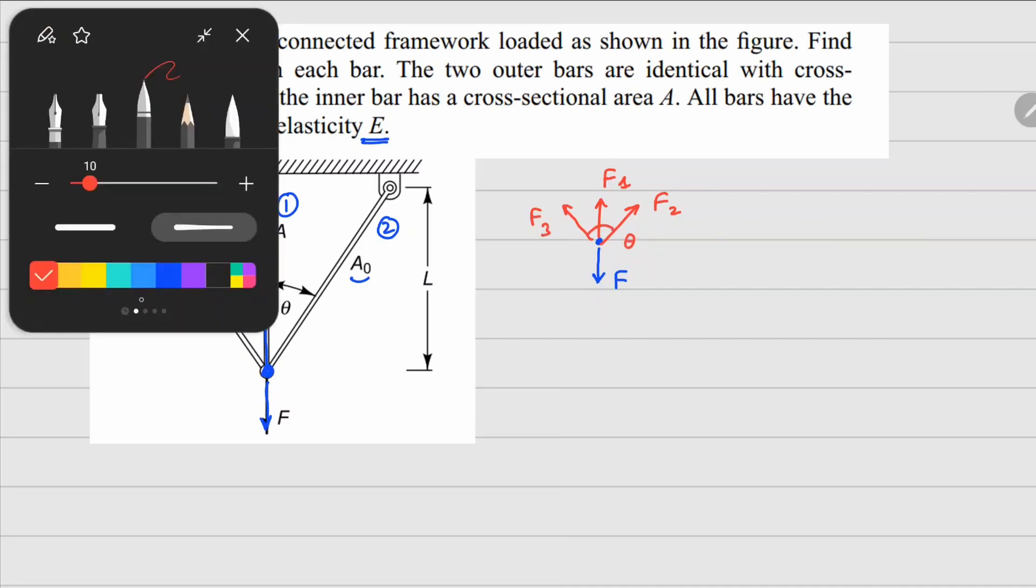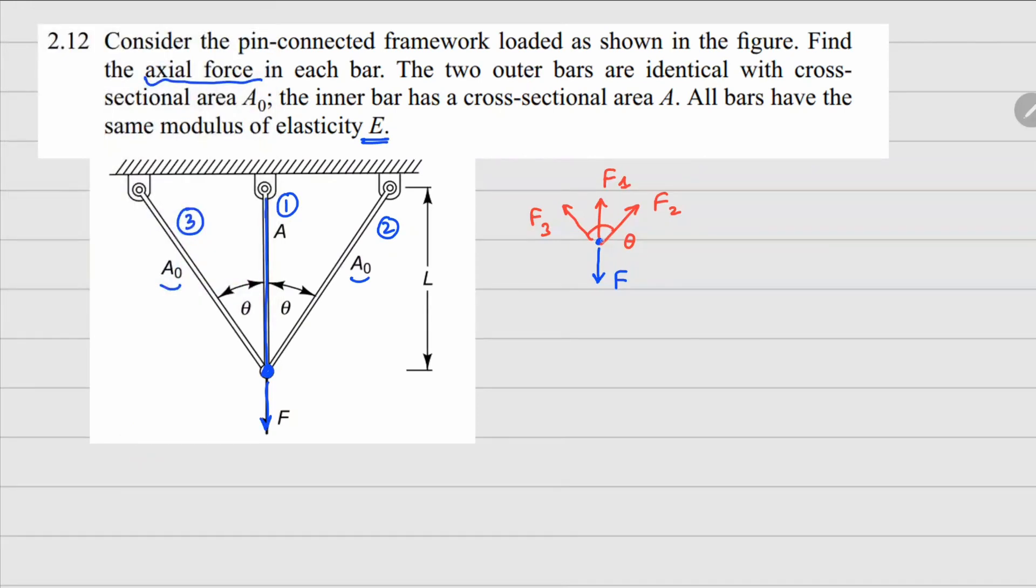If you write the force balance equation here, from the x force balance, your F2 is going to be F3, which is true from the symmetry point as well. And in the y direction we are going to have F1 plus 2F2 cos theta equals to F.